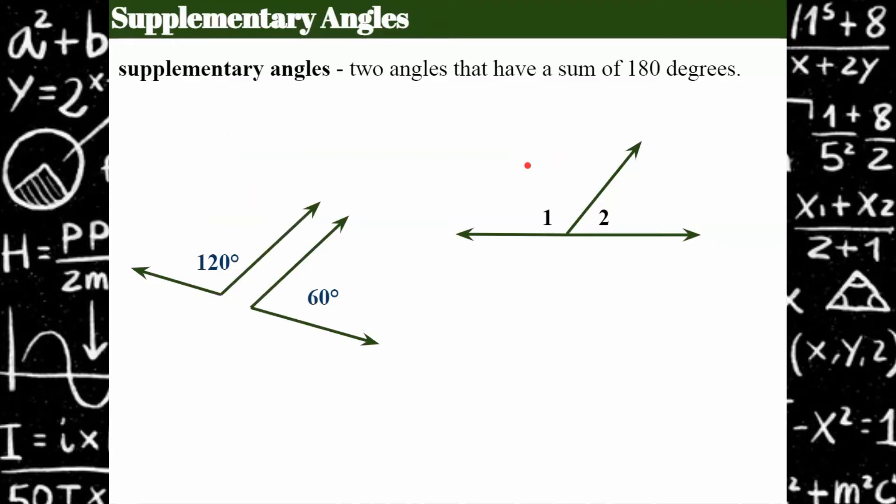Supplementary angles are two angles that have a sum of 180 degrees. So again, these are separate angles, but when added, 120 plus 60 is 180 degrees.